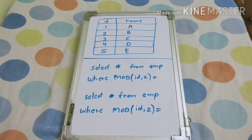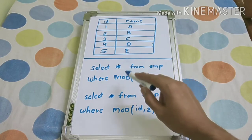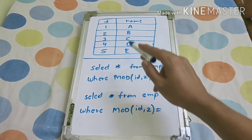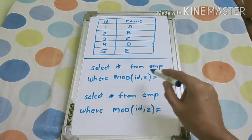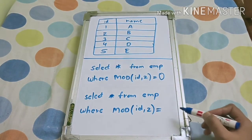For finding even number of records, you have to write the first query: select star from EMP where mod of ID comma 2 equal to 0.